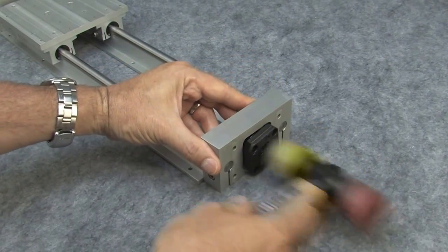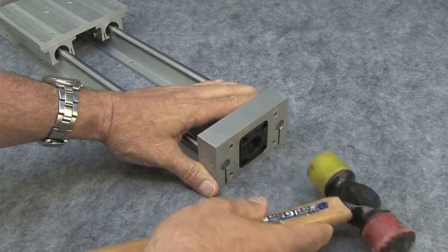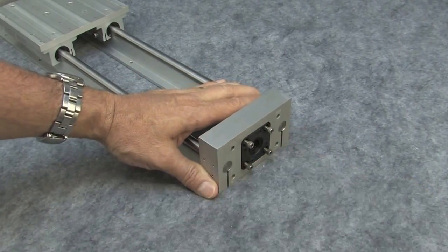Get the new flange bearing unit and insert it. If it's tight, gently tap it into place or press it in. Install the flange bearing unit's screws.